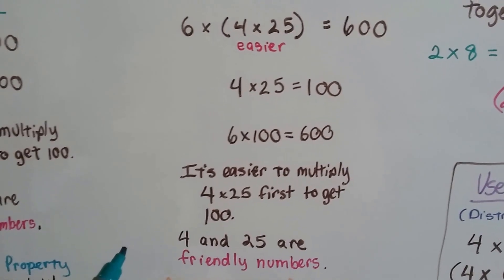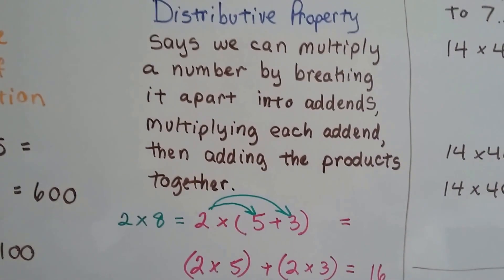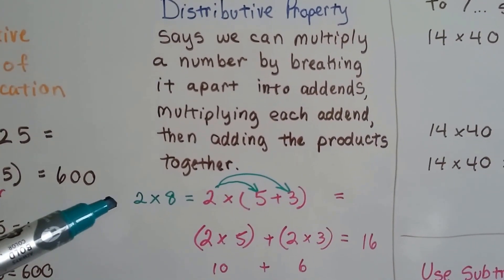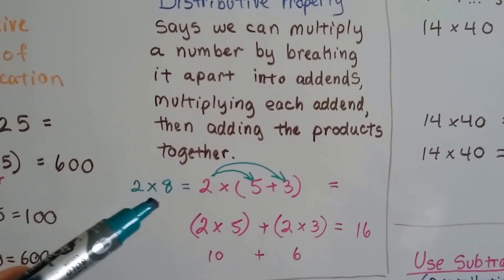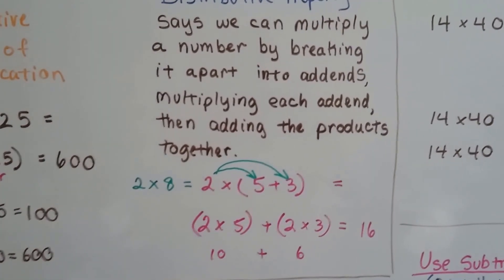We can also use the distributive property of multiplication. If we have 2 times 8, we can break it into 2 times (5 plus 3). 8 breaks into 5 plus 3.